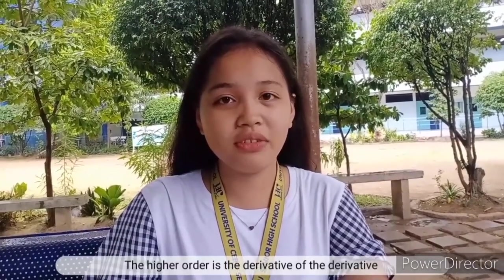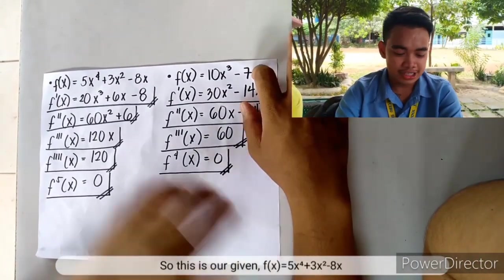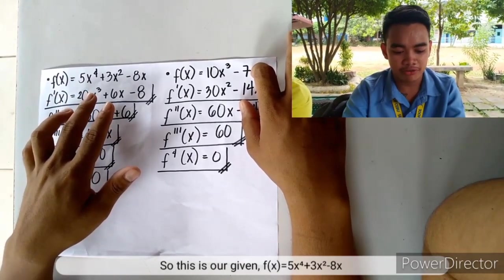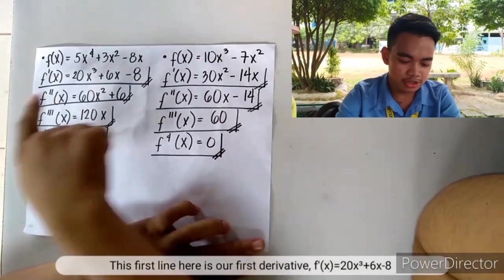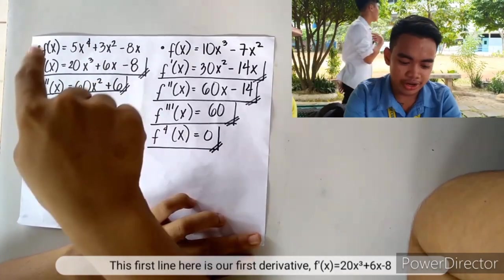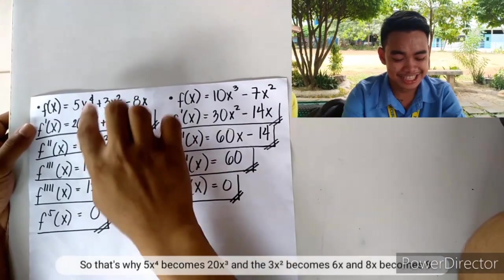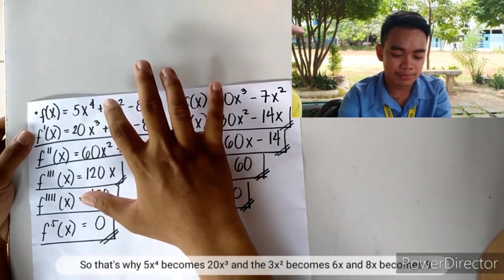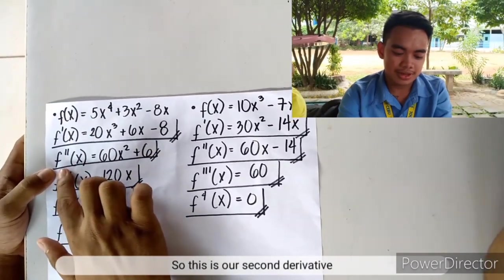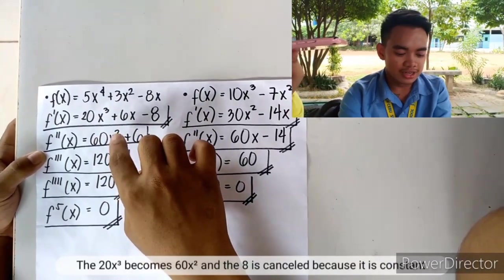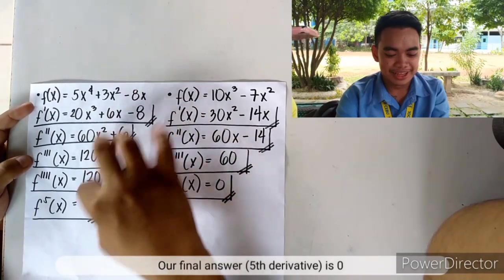Higher order derivatives are the derivative of the derivative. For example, f(x) equals 5x to the power of 4 plus 3x cubed minus 8x. The first derivative using the power rule is f prime(x) equals 20x cubed plus 9x squared minus 8. The second derivative is 60x squared minus 8, and constants are cancelled.